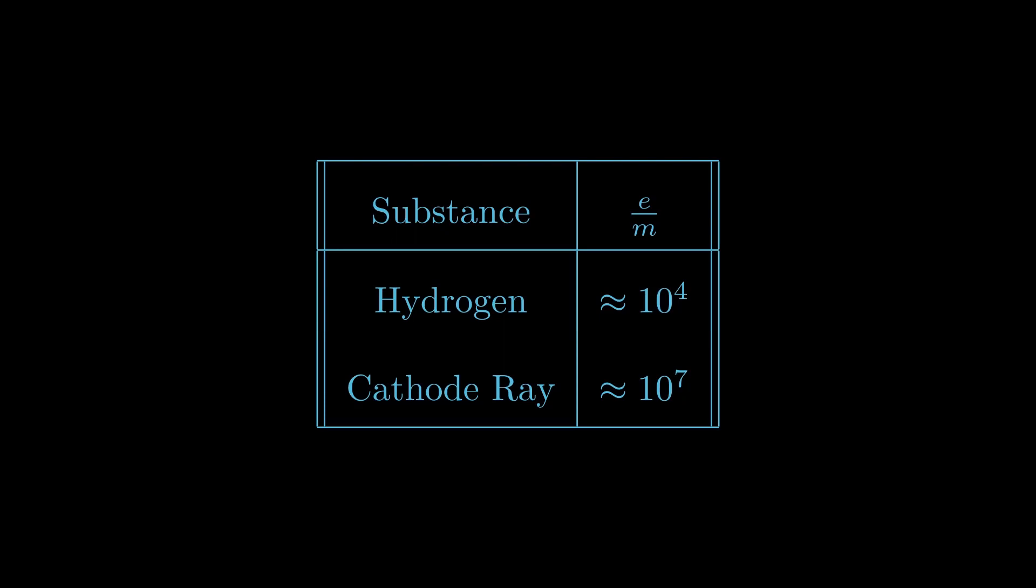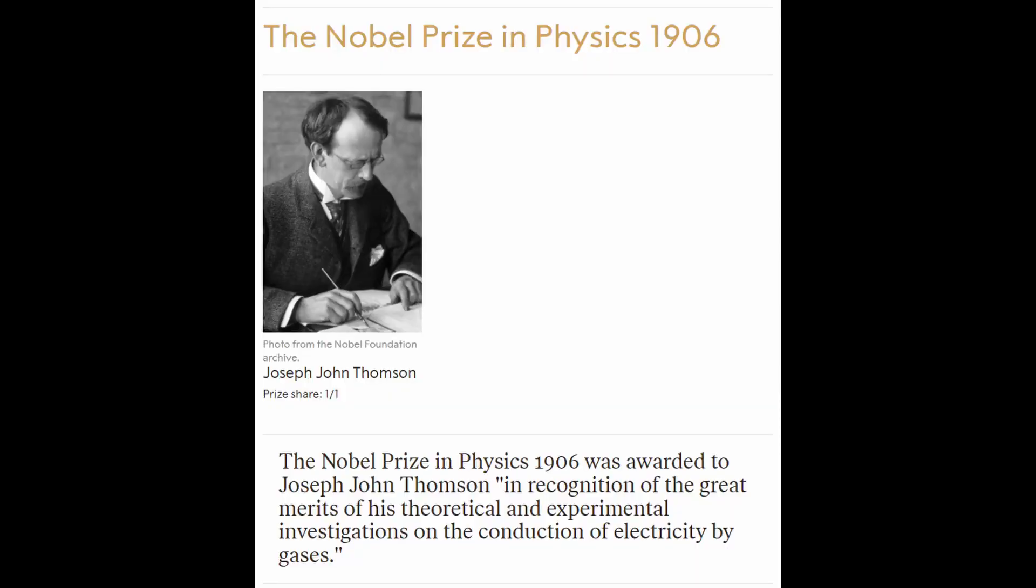Because the charge-to-mass ratio was so large, Thompson knew that he had either found an extremely highly charged particle or an extremely light charged particle. Further experiments would show that it was the latter. But in either case, he knew that he had found something new. And for that, he was given the Nobel Prize in 1906.